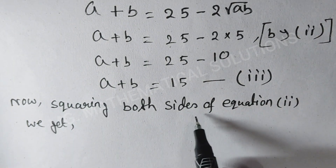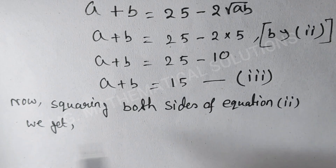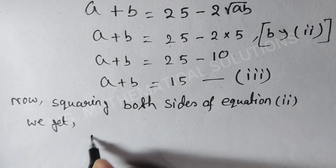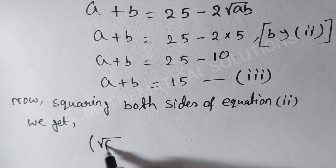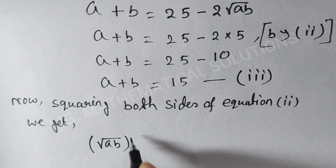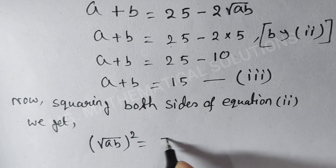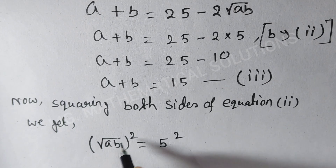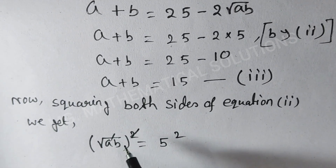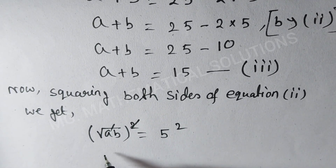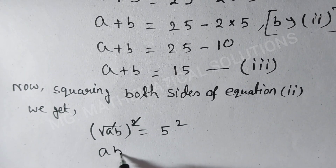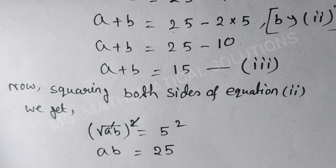Now squaring both sides of equation 2, we get (root ab) whole square equal to 5 squared. Square and root cancel, so ab equal to 25.